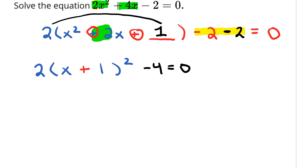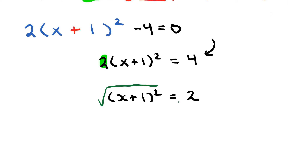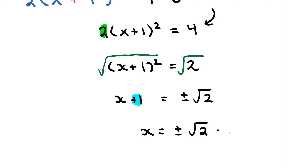From here most students are fine with the algebra steps. Bring the negative 4 over to get positive 4, then divide both sides by 2. Four divided by 2 is 2. Square root both sides: x plus 1 equals plus or minus the square root of 2. Bring the plus 1 over: x equals plus or minus root 2 minus 1.